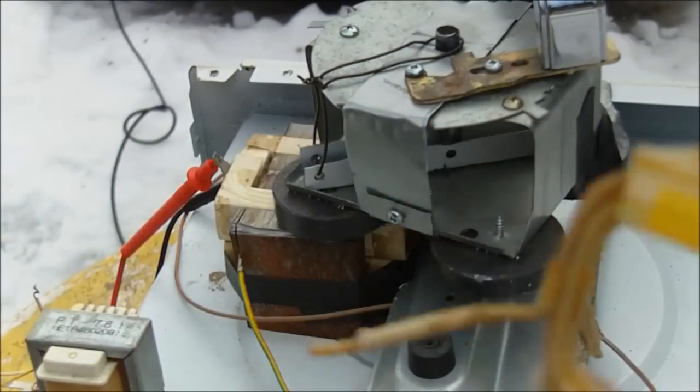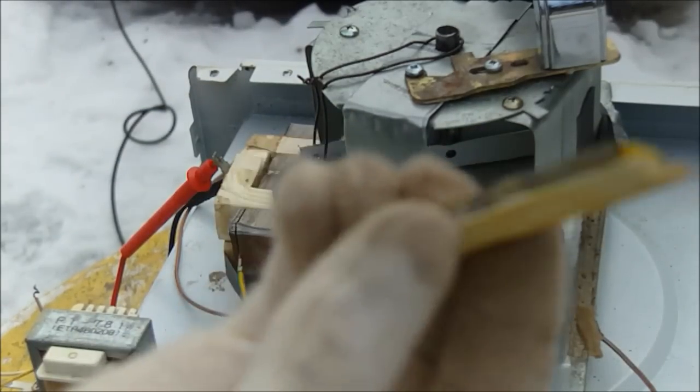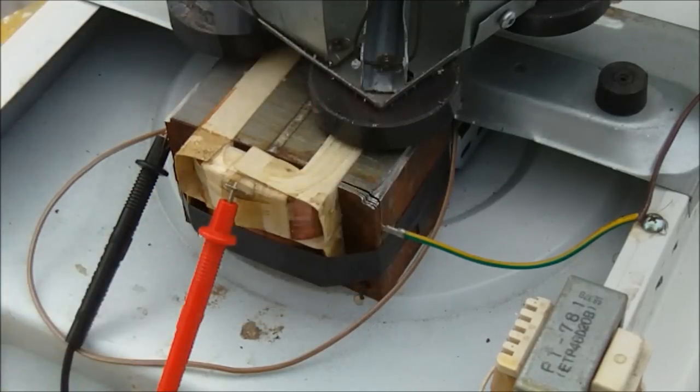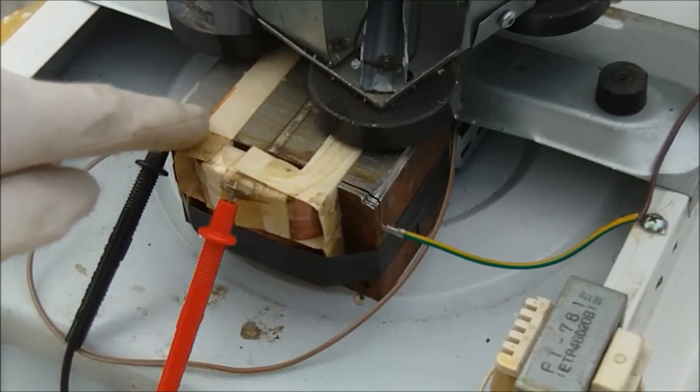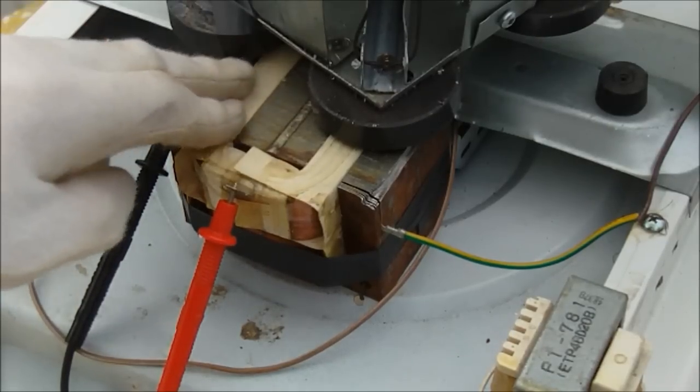I've removed the primary coil, which is this one with thicker windings and less turns. I've also removed this coil and the two shunts that were inside the transformer, these iron spacers. By removing the primary coil, I can then slide in another secondary coil from another microwave oven transformer, which I've done with this one here.